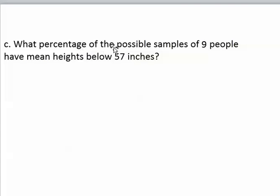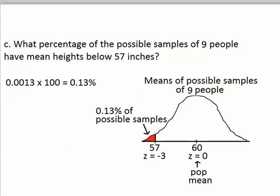What percentage of the possible samples of nine people that we could select would have a sample mean below 57? To answer that question, all we have to do is take the probability that we found in the last question and multiply it by 100. When you multiply it by 100, you change the probability to a percentage.